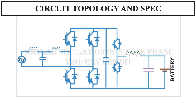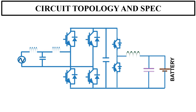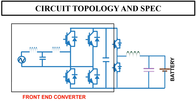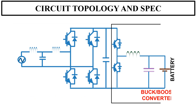This is the basic topology of a single phase battery charging circuit. At the input, we have a front end converter, also known as active rectifier, which converts the AC grid voltage to DC and maintains a constant voltage across the DC bus. Then we have a bi-directional buck-boost converter, used to control the battery current during charging and discharging operation.